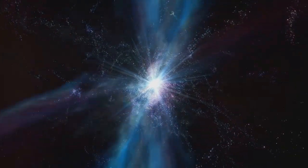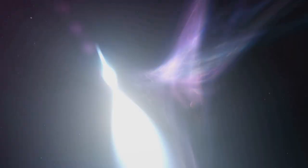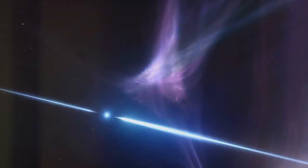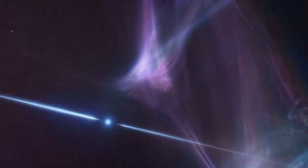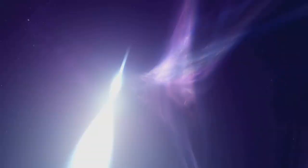The remnants of this cataclysmic event can take two forms. If the core is left with a mass about one to three times that of the sun, it forms a neutron star. These stars are incredibly dense, with a teaspoon of their material weighing as much as a mountain on Earth. They spin rapidly, emitting beams of light that sweep across the cosmos like cosmic lighthouses.